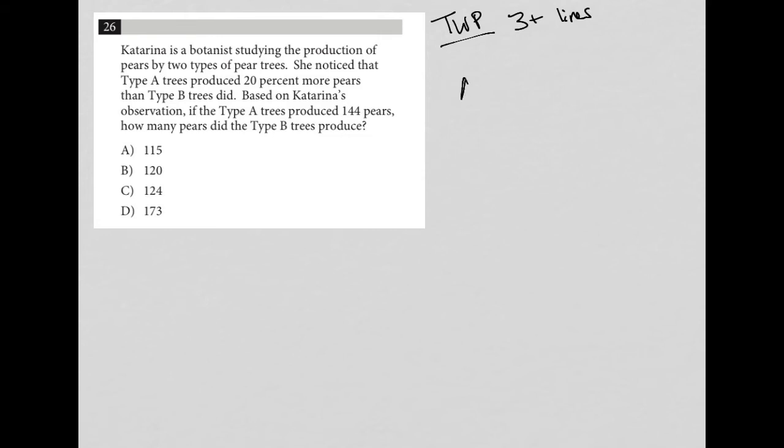First of all, I know I have type A tree and I have type B. Second of all, I know that type A trees produce 20% more pears than type B trees did. So type A trees produce the same amount as B plus 20%. Right, so same amount as B plus an additional 20% of B.